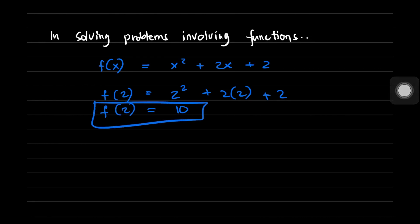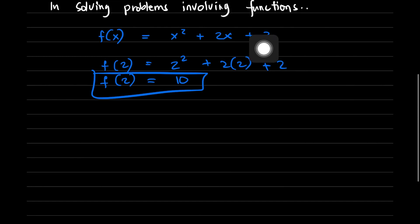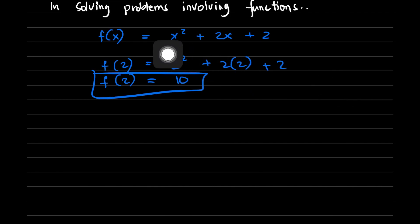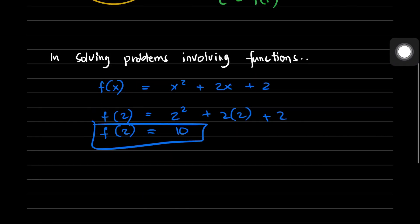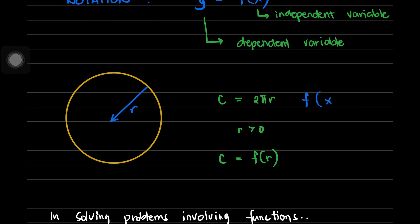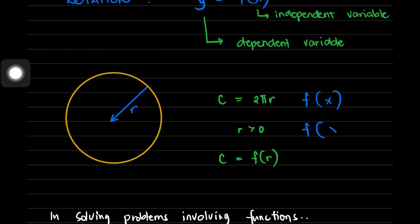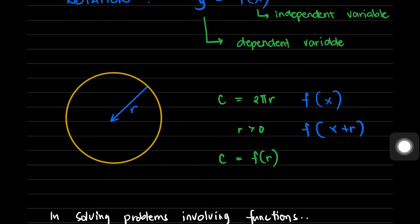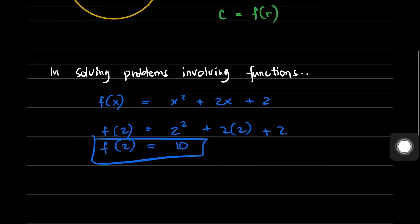Whatever the argument, we just replace x with that argument and simplify the given function. For example, with c = 2πr, if we solve for f(x), we replace r with x. Or if we want f(x + r), we replace r with x + r. That's how we solve problems involving functions.